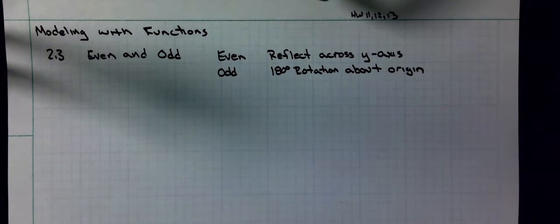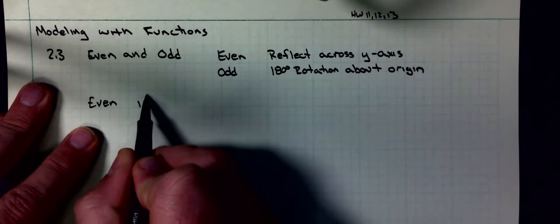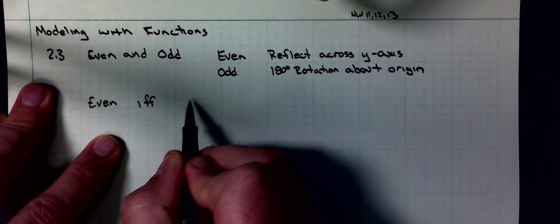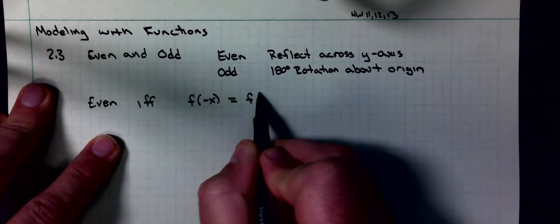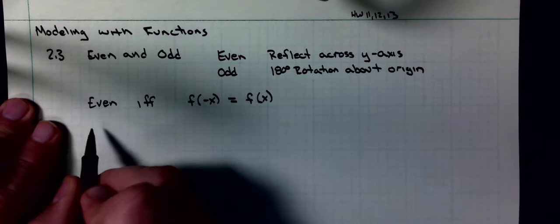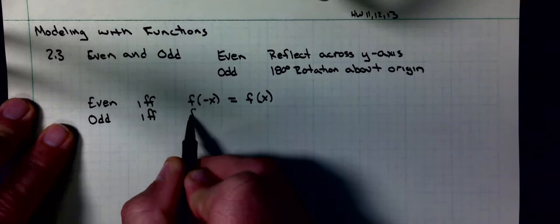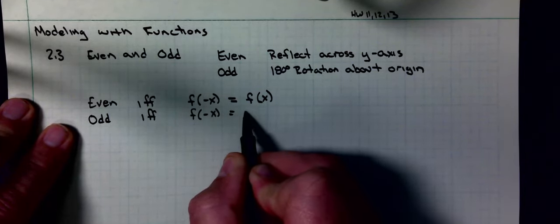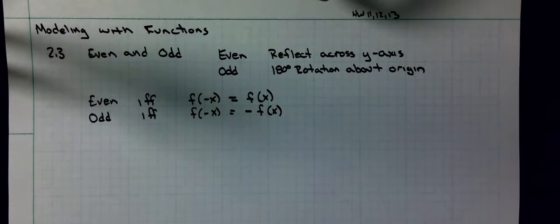The formal definition for an even function is: even if and only if f(-x) equals f(x). And it is odd if and only if f(-x) equals the opposite, negative f(x).